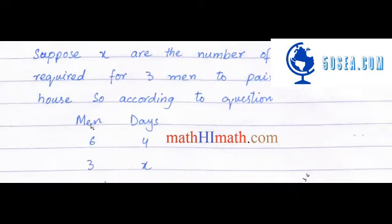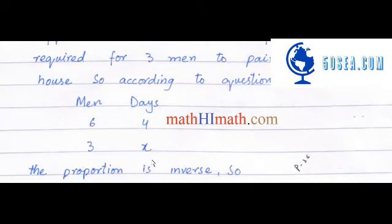تو ہمارے پاس یہاں پر دو variables ہیں ایک men ایک days ہیں. تو six men four days میں اس کو پینٹ کر سکتے ہیں تو ہم suppose کر لیتے ہیں کہ three men x number of days میں اس کو پینٹ کر سکتے ہیں.